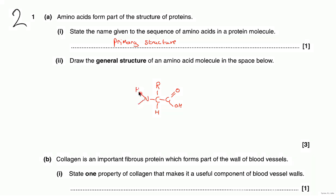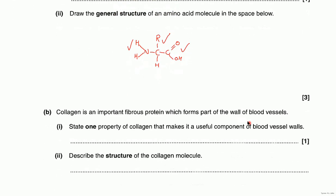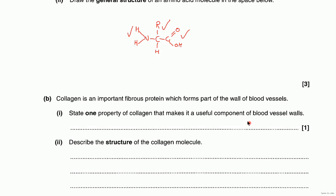The nitrogen has two hydrogens, which would be the amine group. You had one mark for the correct positions of the carboxyl group and the amino group, and the third mark was for the correct groups attached to this central carbon.